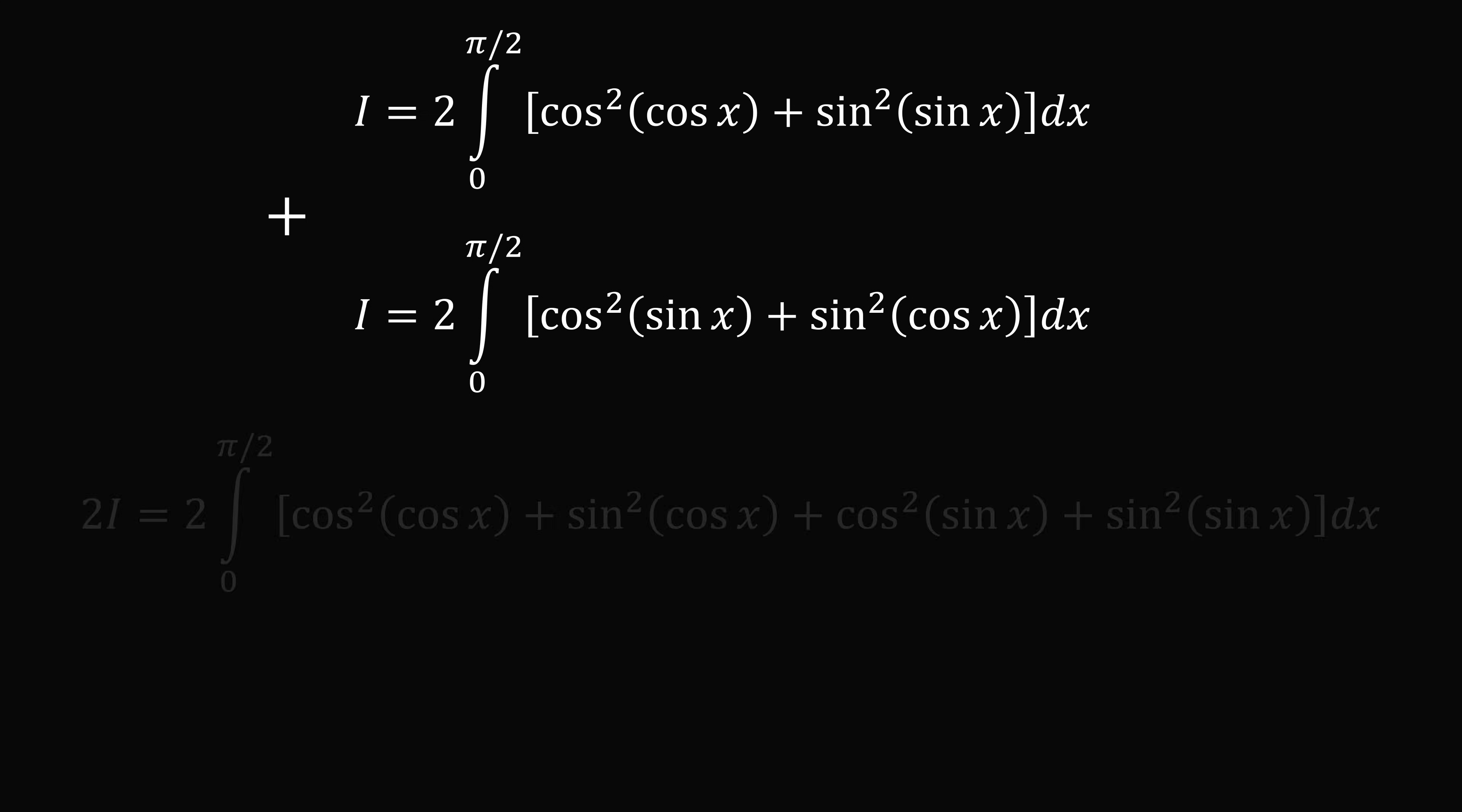So we can now add these two integrals together, and we get that two i is equal to two times the integral from zero to pi over two of cosine squared of cosine x plus sine squared of cosine x plus cosine squared of sine x plus sine squared of sine x all dx.